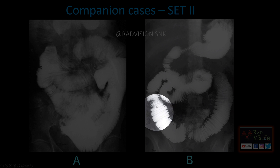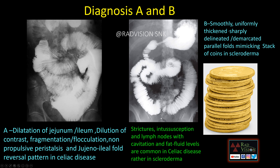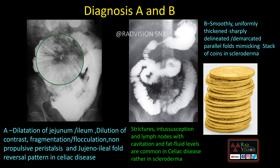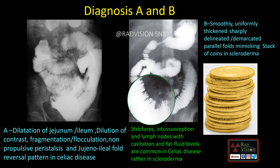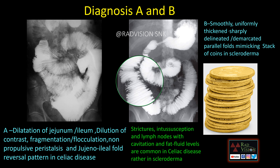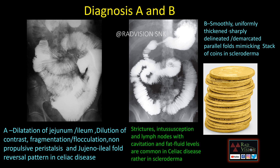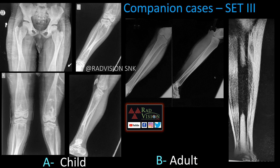The valvulae conniventes show the typical stack-of-coin appearance seen in scleroderma. The first case shows dilation of the jejunoileum, dilution of contrast, fragmentation, flocculation, and jejunoileal fold reversal pattern — this is celiac disease. The second case with multiple parallel valvulae conniventes making stack-of-coin appearance is scleroderma. Strictures, intussusception, and lymph nodes with cavitation and fat-fluid levels are more common in celiac disease.